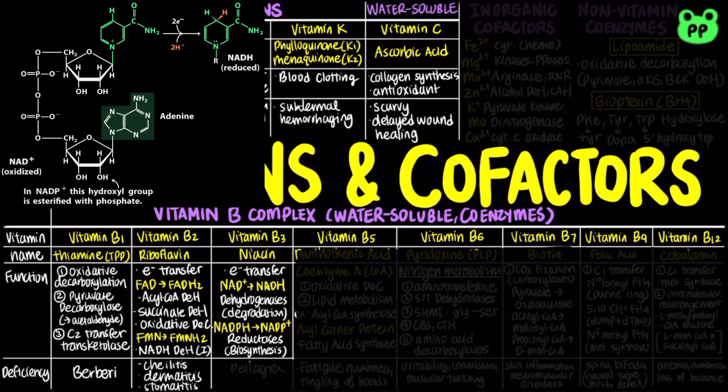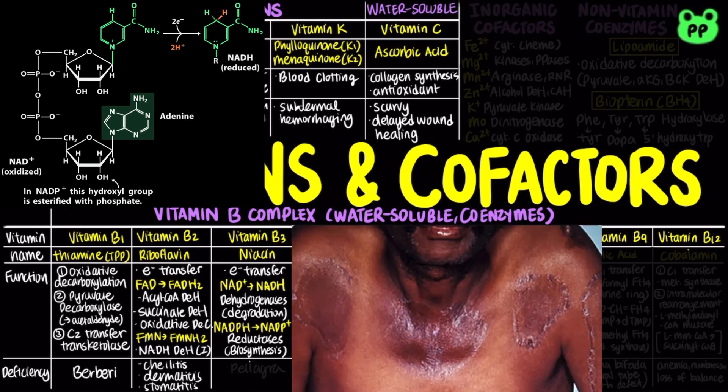Vitamin B3 deficiency leads to pellagra, which causes skin inflammation, diarrhea, dementia, and mouth sores.